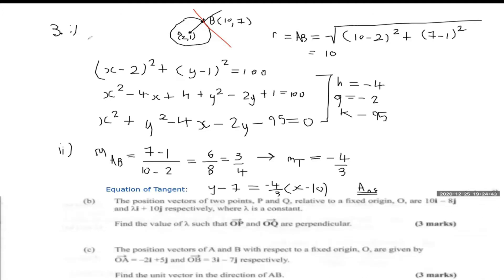Now part B of question 3. They say the position vectors of two points P and Q are relative to the origin. Vector OP equals 10i minus 8j, which in column vector form is (10, -8). Vector OQ is given as (λ, 10). The question says: find the value of lambda such that the two vectors are perpendicular.